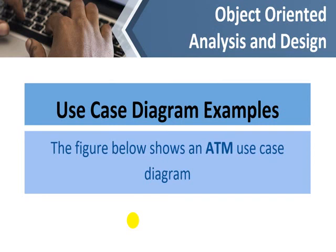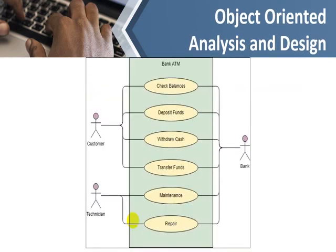Here we have a simple diagram of an ATM machine. The customer is an actor outside the system boundary. Inside the system there are different use cases: a customer can check balance, deposit funds, withdraw cash, and transfer funds. A technician can maintain or repair the machine. On the back end, the bank also interacts — helping with balance checks, fund transfers, and cash withdrawals.